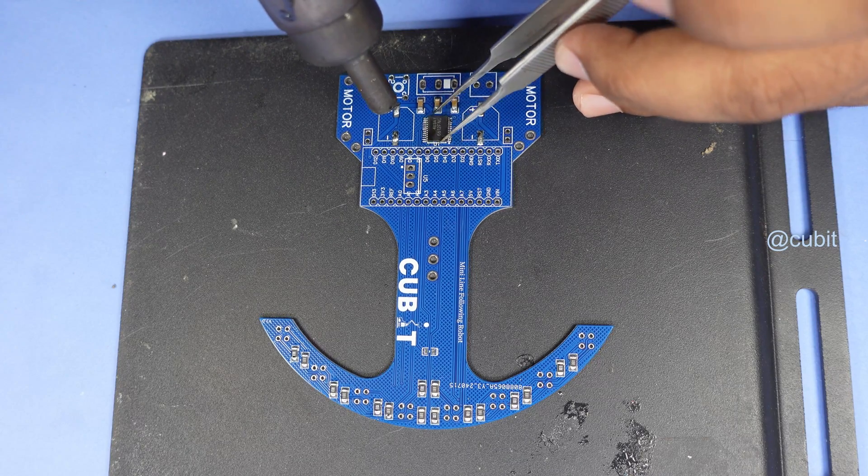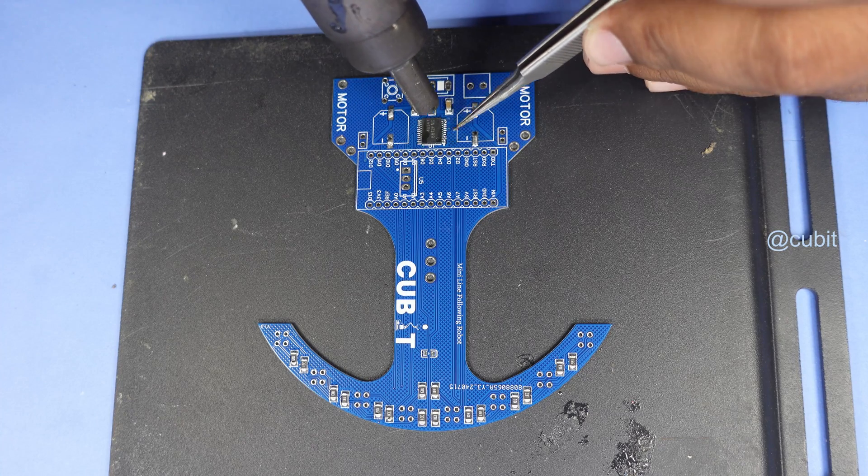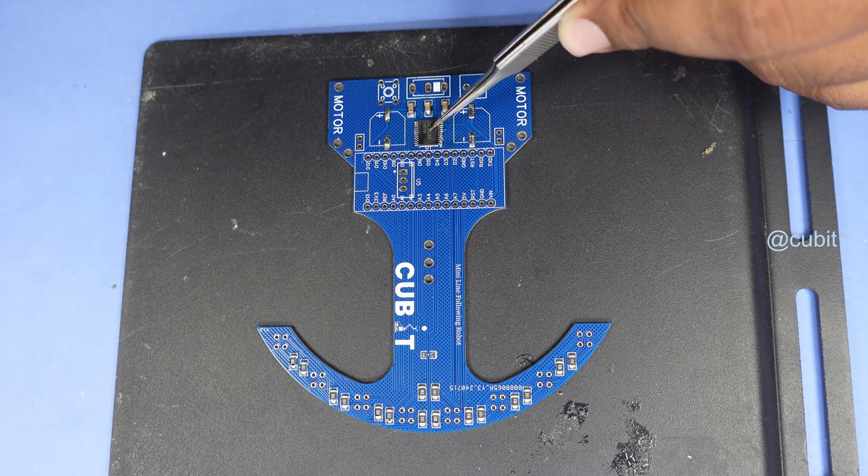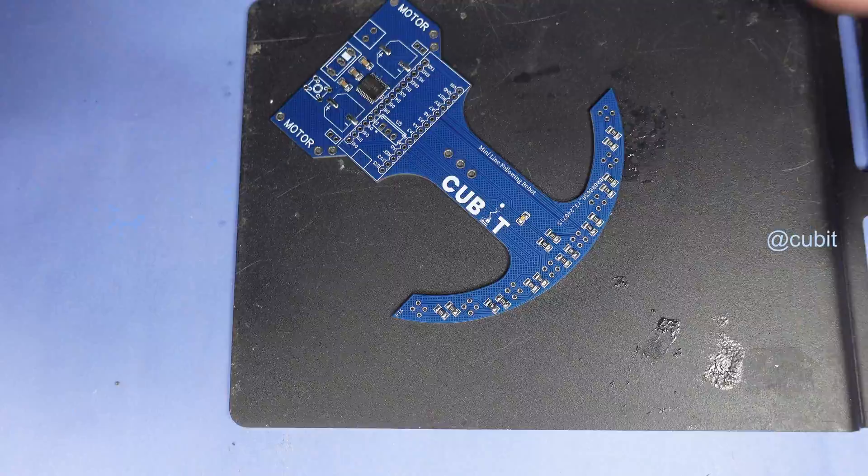Next, we install the TB6612 FNG motor driver IC on the PCB. This IC is critical for controlling the motors of our robot.